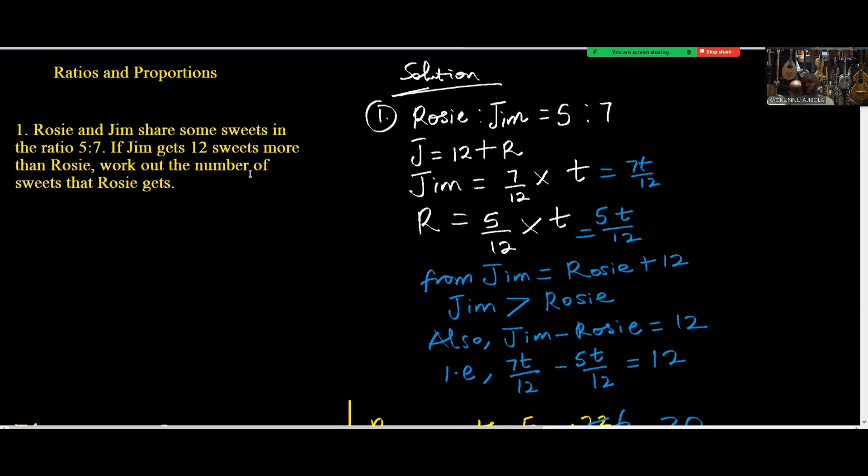Rosie and Jim share some sweets in the ratio of 5 to 7. If Jim gets 12 sweets more than Rosie, work out the number of sweets that Rosie gets. From the solution we have Rosie to Jim as 5 ratio 7. Then from the information we have Jim equal to Rosie plus 12.